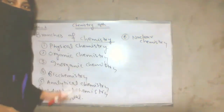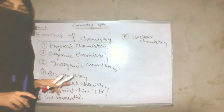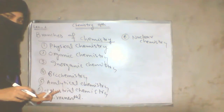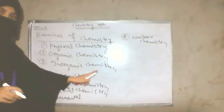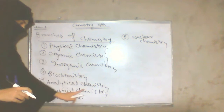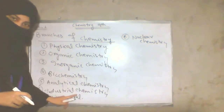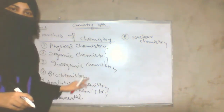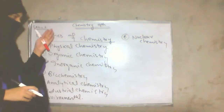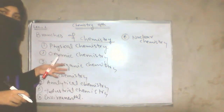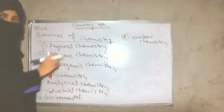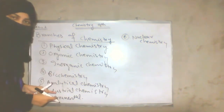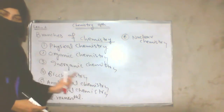All these branches focus on experimental chemistry, industrial chemistry, and nuclear chemistry. These branches are made so that the effect of chemistry can be understood according to your life. That is why we have made the branches of chemistry and that is why we study all the details.